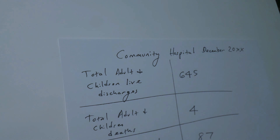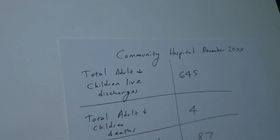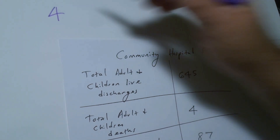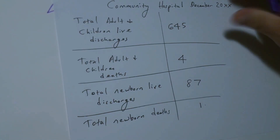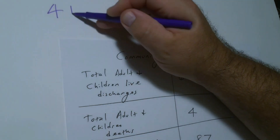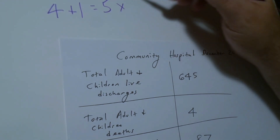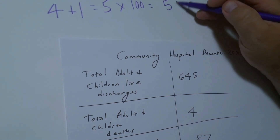For the first one, let's calculate the hospital death rate gross. On top, as you recall, we need the number of deaths of inpatients. We have 4 adult and children deaths and 1 newborn death, so we add those together — 4 plus 1 equals 5. We multiply that by 100, so our numerator is 500.